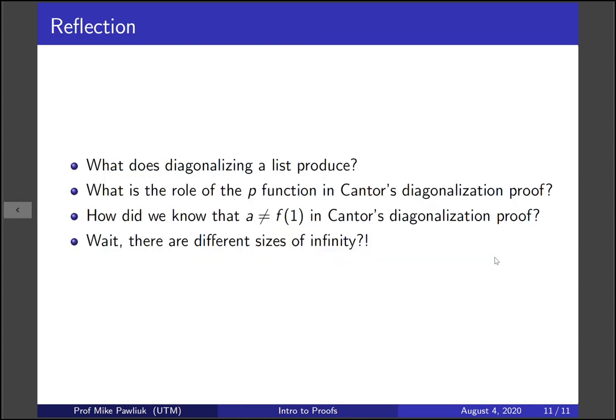Let's end with some reflection. What does diagonalizing a list produce? What is the role of the p function in Cantor's diagonalization proof? How did we know that a was not equal to f(1) in Cantor's diagonalization proof? And wait, there are different sizes of infinity? What did we just show? Thank you very much and have a great day.